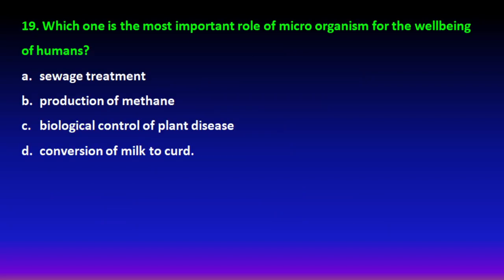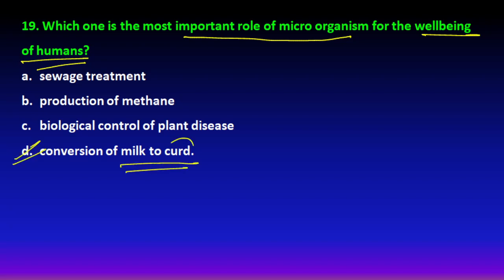Final question: which of the following is an important role of microorganisms for the well-being of humans? Sewage treatment and production of methane don't have a direct role for humans, and biological control of plants doesn't either. But conversion of milk to curd — curd is a good probiotic that greatly helps digestion, and many people eat it with or after meals. So option D (milk to curd) is the direct role in human well-being, and option D is the right answer. That's all for this video — please like, subscribe, and share with your friends. MCQs on all topics for class 11, 12, and NEET are available. Thank you and have a nice day!